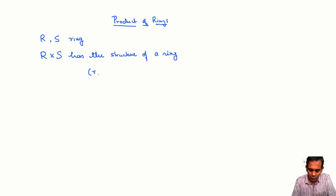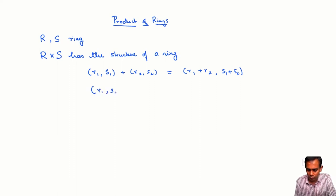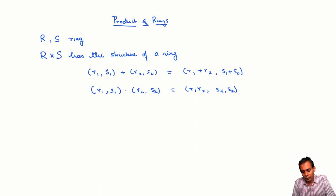So if you have (R1, S1) + (R2, S2), it's just going to be (R1 + R2, S1 + S2), and (R1, S1) · (R2, S2) is just going to be (R1·R2, S1·S2). It's not difficult to check that this operation will inherit all the ring axioms from the corresponding axioms for R and S.